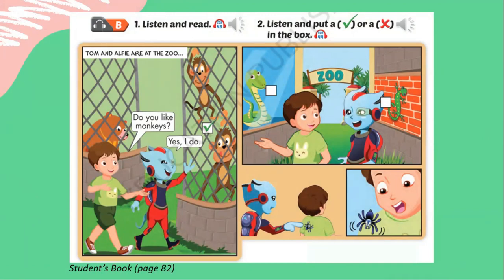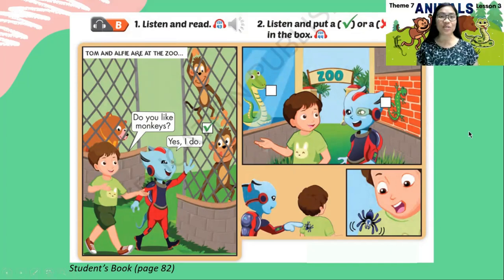Hey, Alfie! Do you like snakes? Oh, no. I don't. Tom! Tom! Look! Where? There! It's a lizard! Do you like lizards? No, I don't. Tom? Yes, Alfie. Do you like spiders? No, no, I don't. Tom also doesn't like spiders.